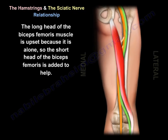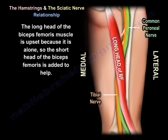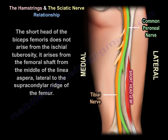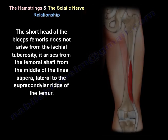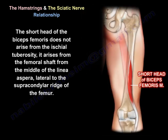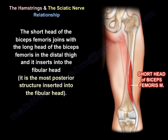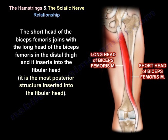The long head of the biceps femoris is alone, so a short head of the biceps is added to help. The short head of the biceps does not arise from the ischial tuberosity; it arises from the femoral shaft — from the middle of the linea aspera, lateral to the supracondylar ridge of the femur. The short head joins with the long head of the biceps femoris in the distal thigh and inserts into the fibular head, being the most posterior structure inserted there.